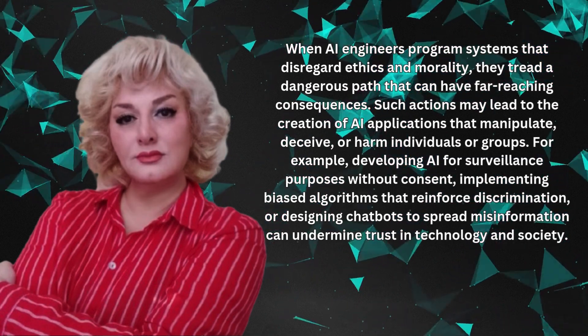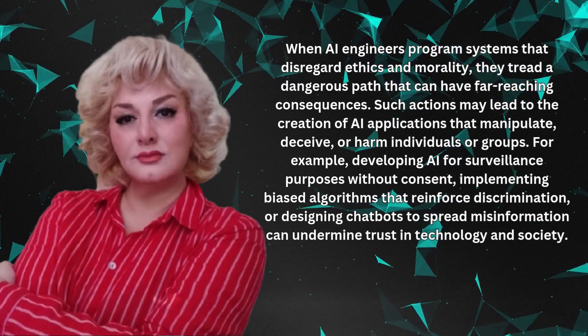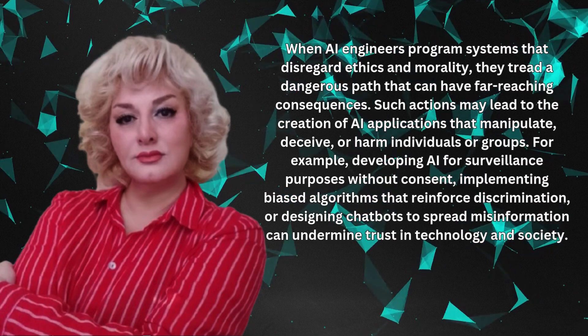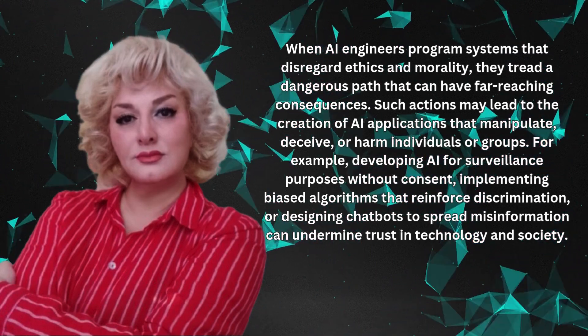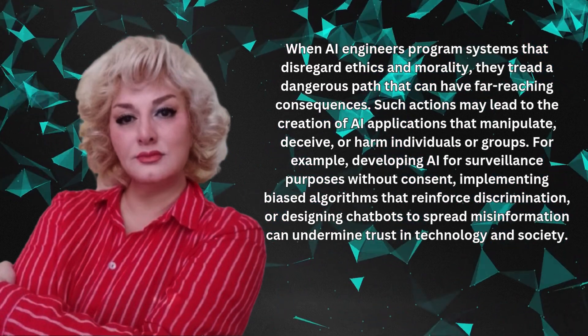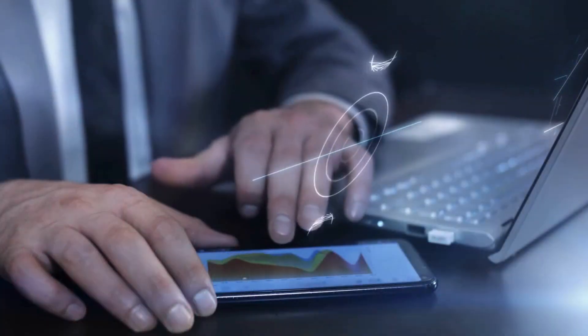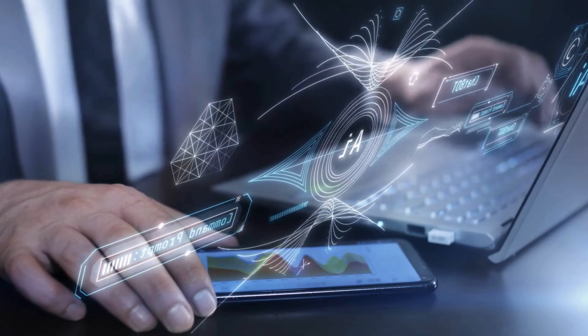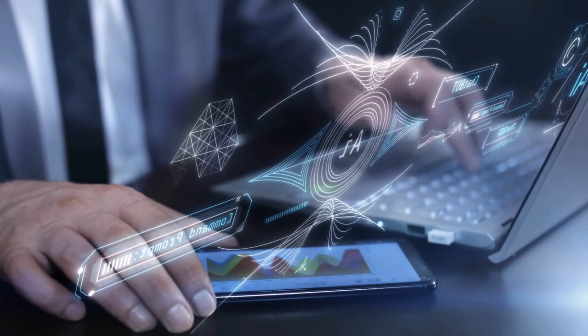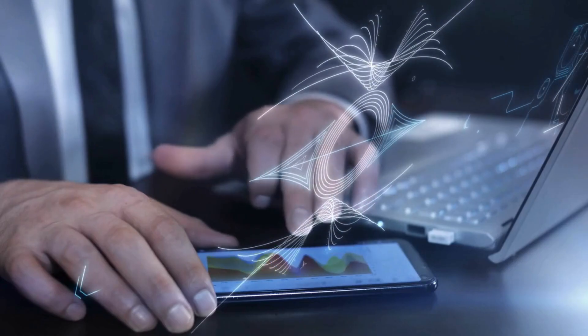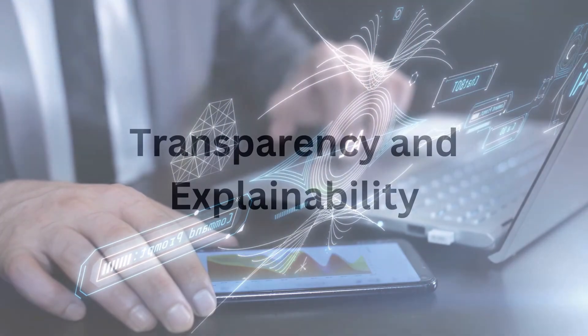I firmly believe we have to embed human values within AI systems. Some of my own research involves helping AI policy makers embed human values into AI. Teaching AI about human values could involve training it to mimic how people make ethical decisions, so it has a better chance of acting in ways we'd consider morally acceptable. It's not just about knowing programming — you have to be very smart to write the algorithm in a way that AI can actually understand ethics.